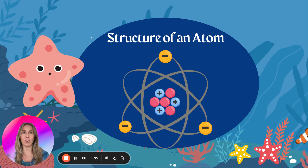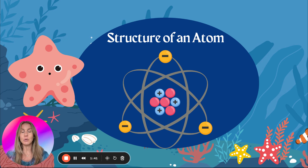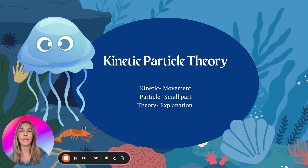Let's start with something simple: the structure of an atom. You are required to know that in the nucleus — the center of the atom — you have protons, which are positive, and neutrons, which are neutral. Those are located inside the nucleus. Orbiting around the nucleus are the electrons, which are negative. So protons and neutrons are in the center, the nucleus, and electrons are orbiting around.